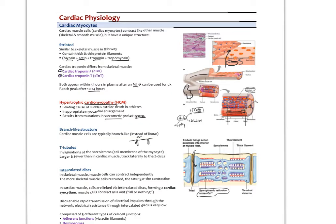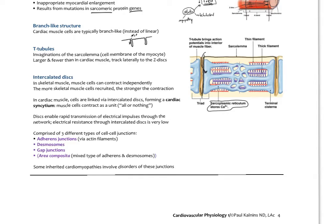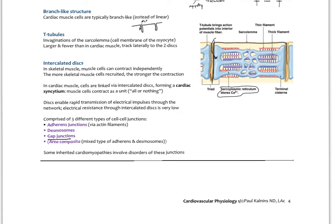This property is known as a syncytium, so cardiac muscle cells form the cardiac syncytium — muscle cells contract as a unit, an all-or-nothing phenomenon. The intercalated discs really have three types of cell junctions: adherence junctions via actin filaments, desmosomes, and the gap junctions which are essentially ion channels allowing ions to pass through. Cardiomyopathies can also involve genetic problems of the genes that code for the different proteins comprising these junctions — another potential cause of cardiomyopathy.